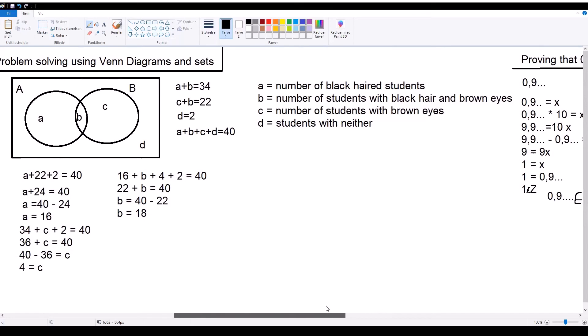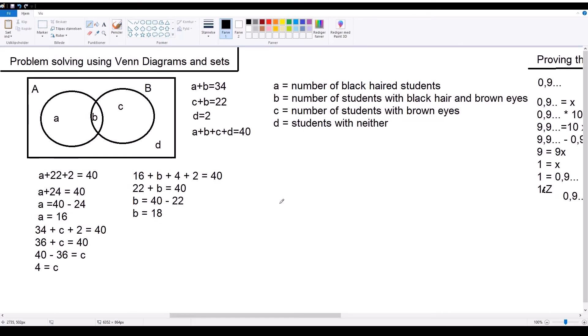Moving on, you have problem-solving using Venn diagrams and sets. Here we have a class of 40 students, where we're trying to find out how many of the students are black-haired, how many have black hair and brown eyes, how many have only brown eyes, and how many students have neither. We know that 34 students are black-haired or have black hair and brown eyes. We also know that 22 students either have black hair and brown eyes or have only brown eyes, and we also know that two of the students have neither.